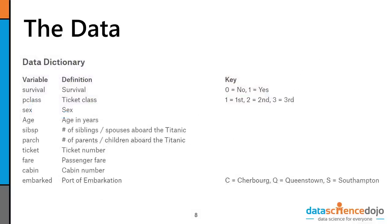Let's go over the data dictionary for the Titanic data set. First up, we have a variable called survived — it defines survival. It's a binary indicator: it's zero when a passenger did not make it and perished, and it's one if they actually survived. Next up, we have the ticket class or P class. The way to think about this in modern times is trains — you can buy a first class, second class, or third class ticket. All of these are designations of the level of accommodations on the Titanic.